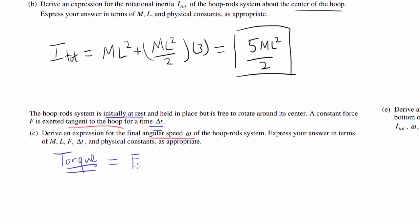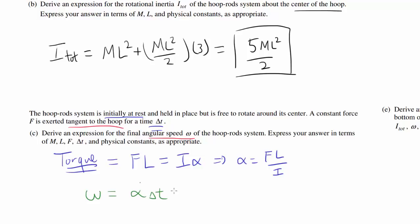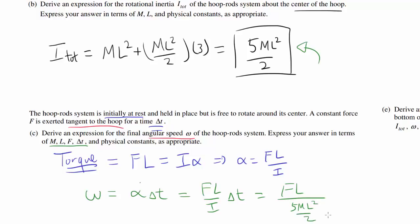Our torque is simply force times the radius, so torque equals FL. Since torque equals moment of inertia times angular acceleration, we can find the angular acceleration as FL over I. Starting from rest and speeding up for time delta t, our final angular speed is alpha times delta t, giving omega equals FL over I times delta t. Substituting I equals 5ML squared over 2, we get omega equals 2F delta t over 5ML.